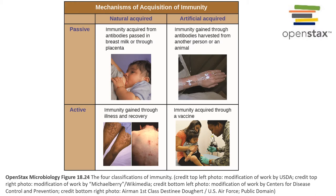Passive immunity is acquired from another person or another animal, and passive immunity means that while that person is protected, it's usually just a temporary protection because the adaptive immune response of that individual has not become activated and they did not develop the memory to antigens associated with that pathogen.